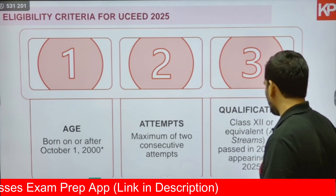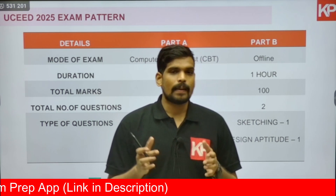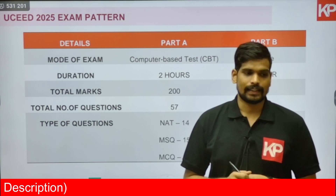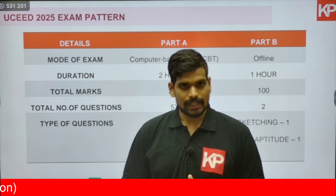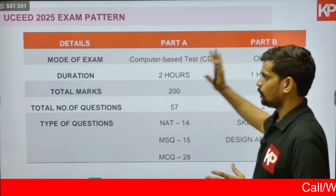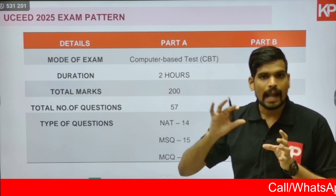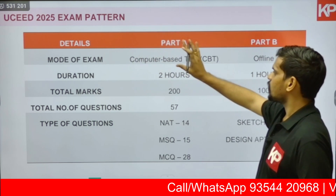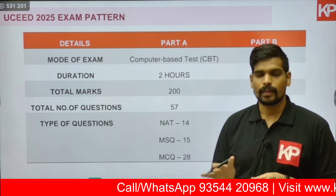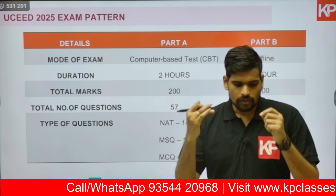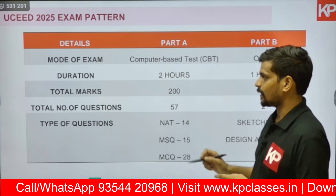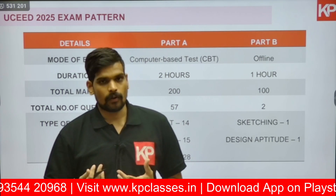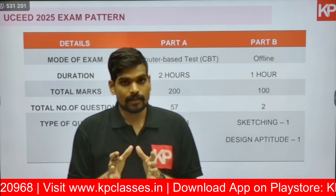Let us now look into the exam pattern. The UCEED examination is divided into two parts — Part A and Part B — and the mode of examination is different for both. Part A is a Computer Based Test (CBT), where you get questions on the computer and submit answers on the computer. Part B is not computer-based; it is a sketching test on a physical paper.